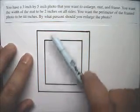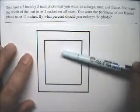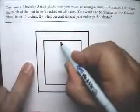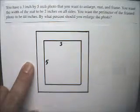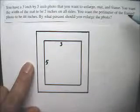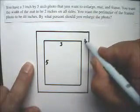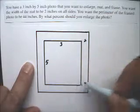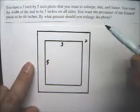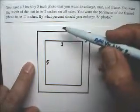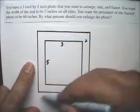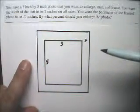In this story problem, we have a photo that is 3 inches by 5 inches. And you want to enlarge it, mat it, and frame it. And you want the width of the mat to be 2 inches on all sides. So this is 2 inches all the way around. And you want the perimeter of the frame photo to be 44 inches. So this side plus this side plus this side plus this side has to be 44 inches.